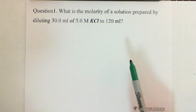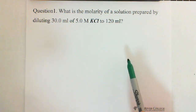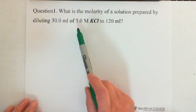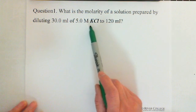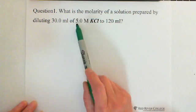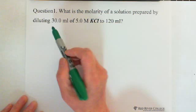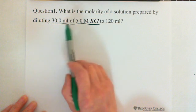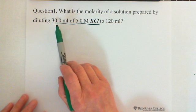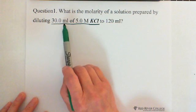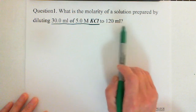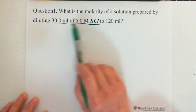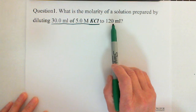Every time you work with a dilution problem, you need to identify which solution is more concentrated. The 5 molarity, 30 milliliter solution — this is prepared by diluting 30 milliliters of 5.0 molarity — this is the stock solution. You can check: diluting 30 milliliters to 120 milliliters. So this is the high concentration, and after diluting you get the low concentration.